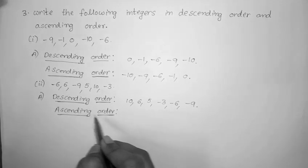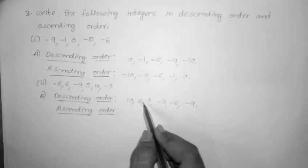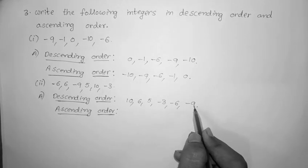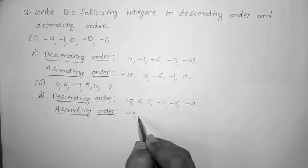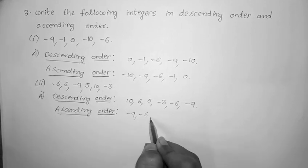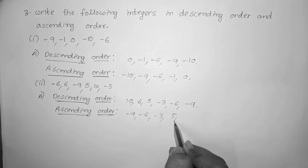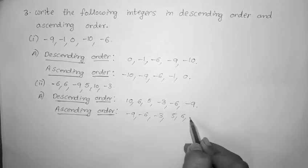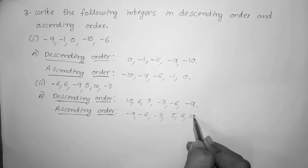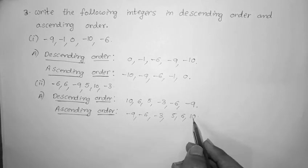Ascending order means smallest number to biggest number. Ascending order is the reverse of descending order. So ascending order: minus 9, minus 6, minus 3, 5, 6, 10. This is ascending order — smallest number to biggest number.